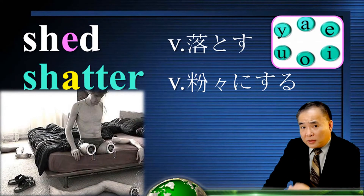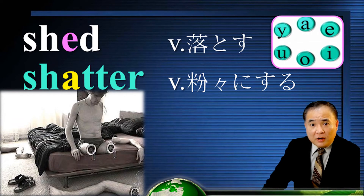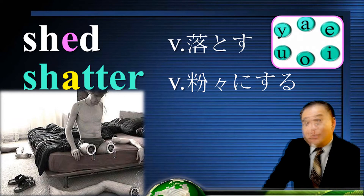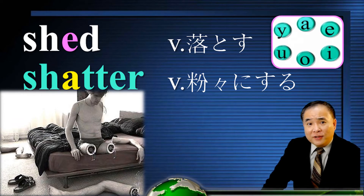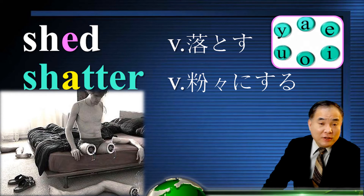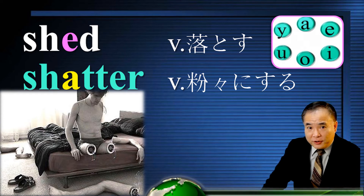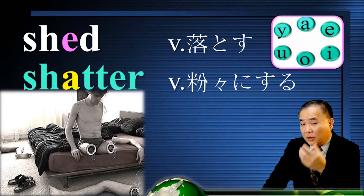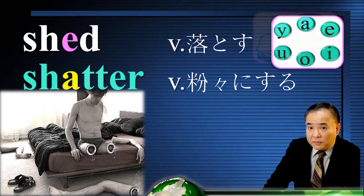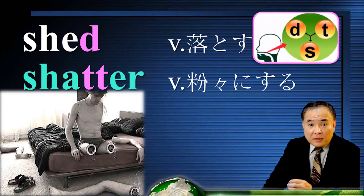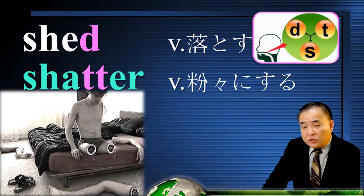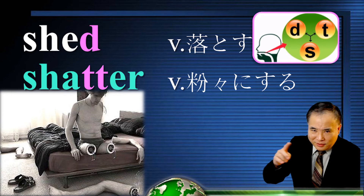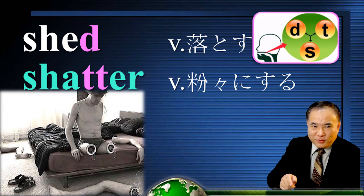Another important word, shade, comes from shatter. E in shade is A in shatter — A-E-I-O-U, they're interchangeable. And D in shade is T in shatter — D-T-S, they're interchangeable.